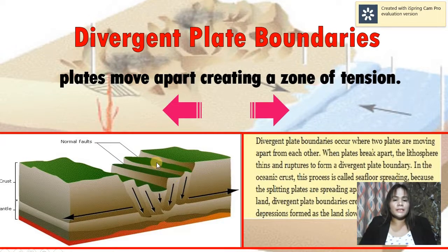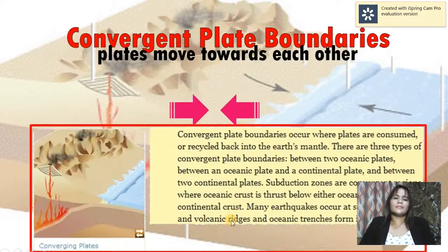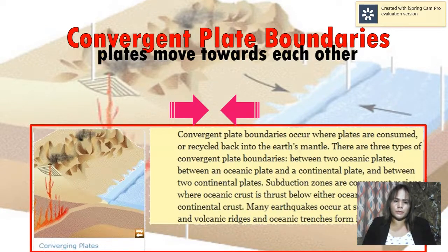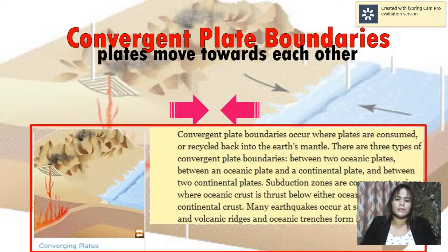Moving on to the next, we have the convergent plate boundary. This is the opposite of divergent — they converge, meaning they go towards each other. The plates move towards each other, so they tend to collide.